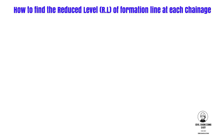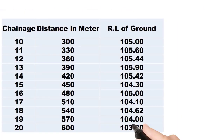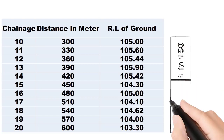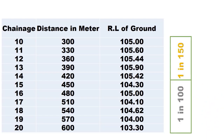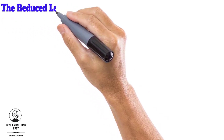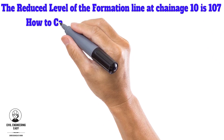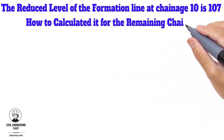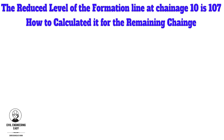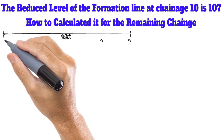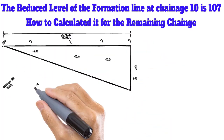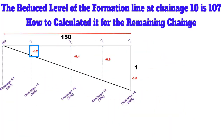Now let me show you the procedure for how to find the reduced level of the formation line at each chainage. You need to focus on the data from chainage 10 to 14, because the gradient from chainage 10 to 14 is 1 in 150 downgrade. The formation level at chainage 10 is given — that is 107. To find the reduced level of chainage 11, 12, 13, and 14, consider the similarity of triangles: 1 downgrade in 150 — how much will there be down in a 30-meter distance?